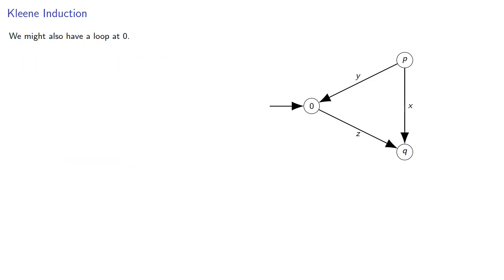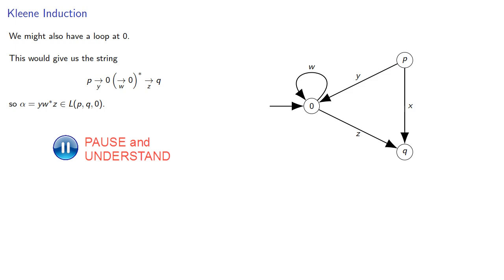Finally, we might have a loop at zero, and this would give us a string of the form [formula shown]. But since W is a single symbol, the star closure is regular, and the concatenation is also regular.